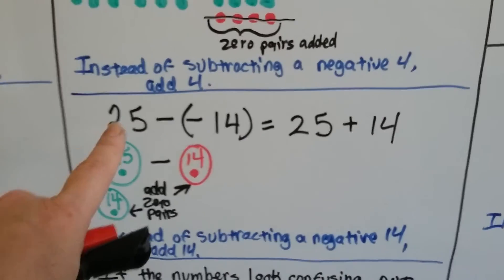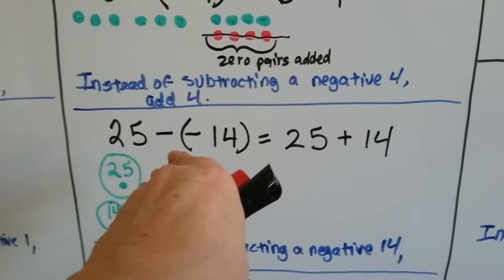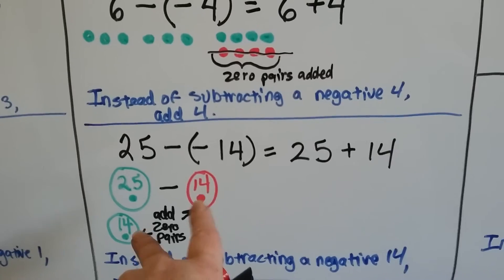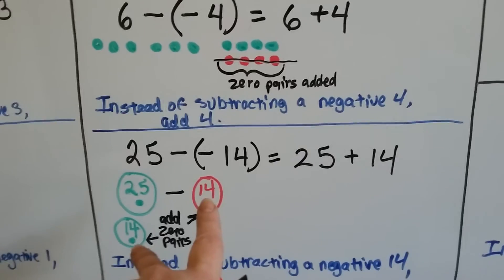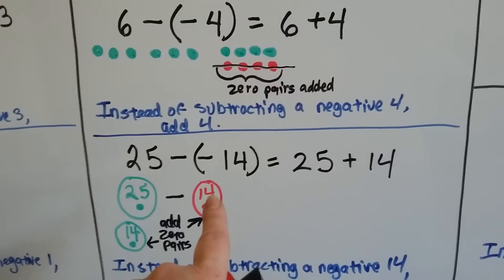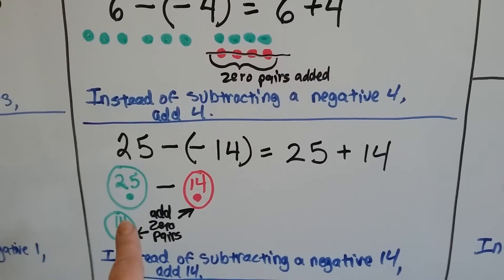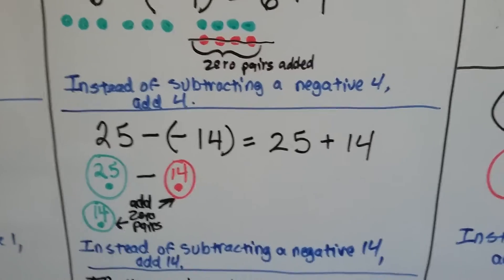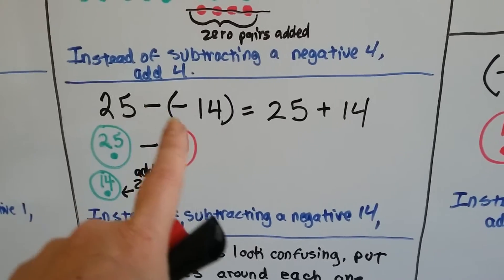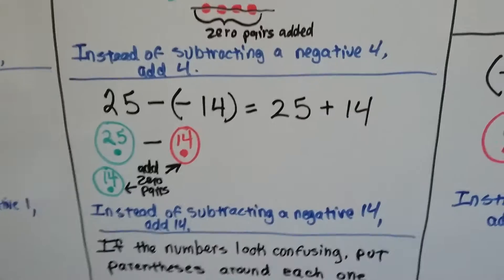Same thing with 25 minus negative 14. If we've got 25 green chips and it says take away 14 red ones, we can't. We'd have to add 14 zero pairs — 14 red and 14 green — to be able to take the 14 away. That would leave 39 green ones behind. It's the same as saying 25 plus positive 14.